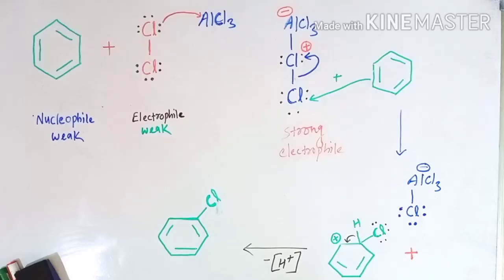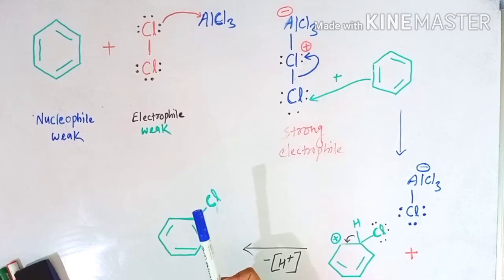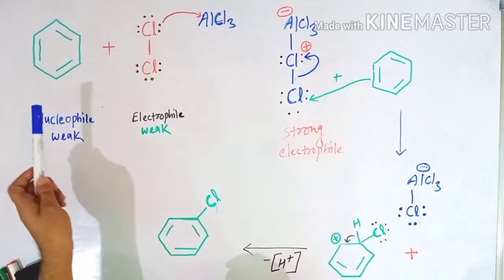Hello dear viewers, welcome back to MedCam Companion channel. Today in this session we will discuss the chlorination of benzene in the presence of aluminum chloride. In a previous video we have already discussed why AlCl3 acts as a Lewis acid, and in this video we will see the application of AlCl3 in facilitating the reaction between two species.